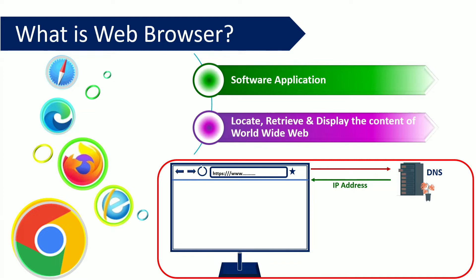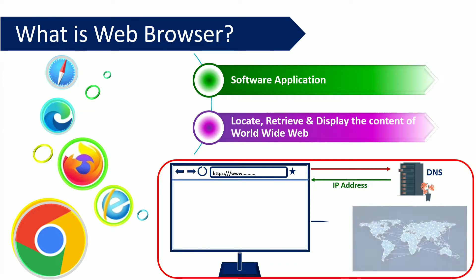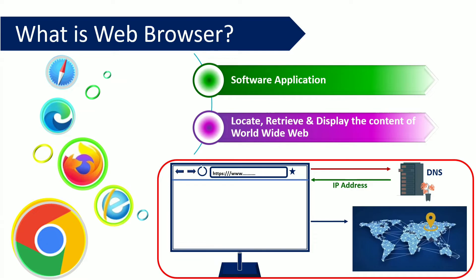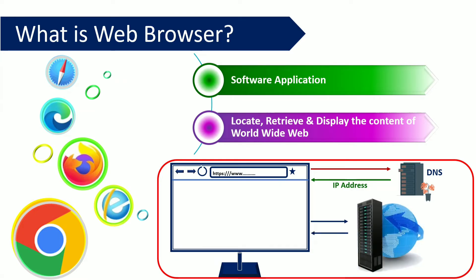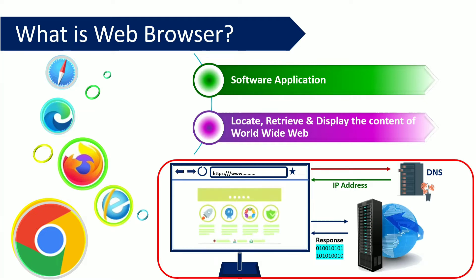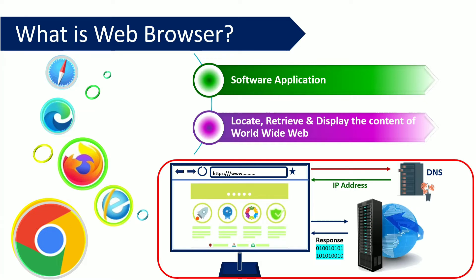Once the browser gets the IP address from DNS, it will search for the server in the World Wide Web and send the request to the server. The server will send a response which usually contains only zeros and ones. The browser will process the response and display the content in the user interface.